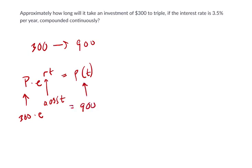Now, if we're solving for T here, I would first divide both sides by 300, and we get e to the 0.035t equals 3. 900 divided by 300 is 3.